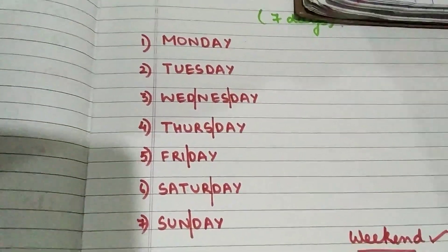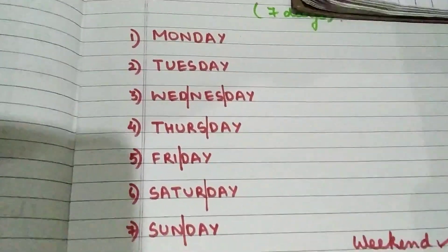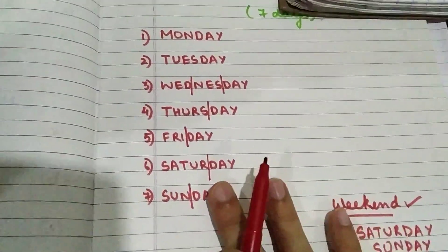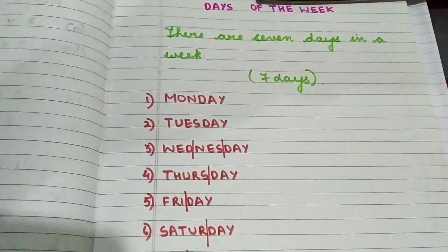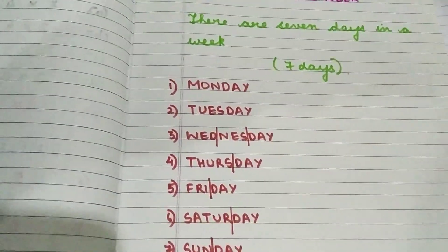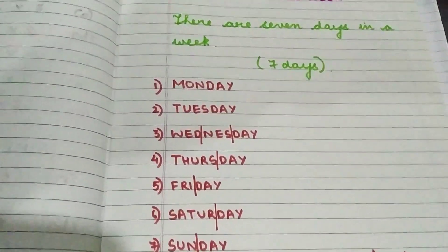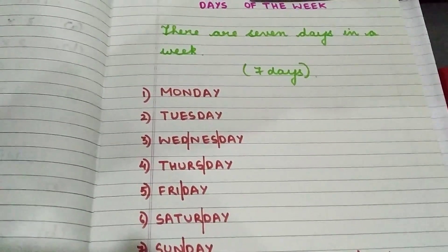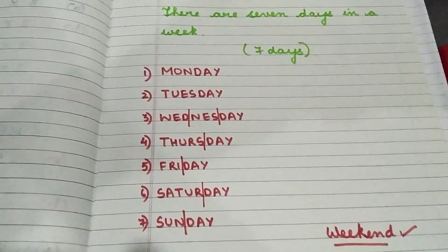You will all learn the seven days of the week today at home. Children, this is all for today. You will all write the days of the week in your maths notebook, put today's date, and I will be giving you the PDF of this work — go through that and write your work. If you have any doubts, you can ask me after 10 minutes. Thank you.